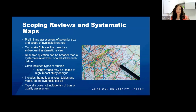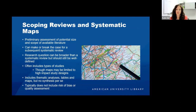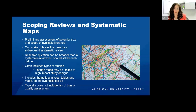Now we'll do a comparison to scoping reviews, which are also called systematic maps. A scoping review can be a preliminary assessment of the potential size and scope of the available literature, and it's often done in advance of a systematic review — you would do a scoping review to see if a systematic review is even needed. The research question for a scoping review is going to be broader than a systematic review, though you still want it well-defined.